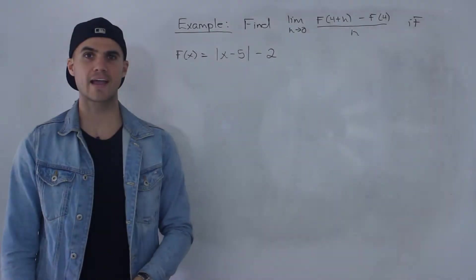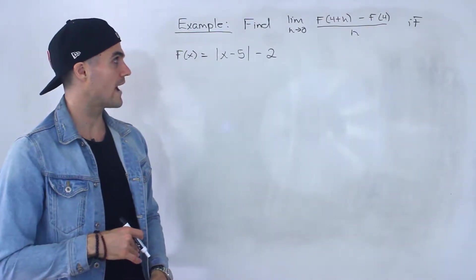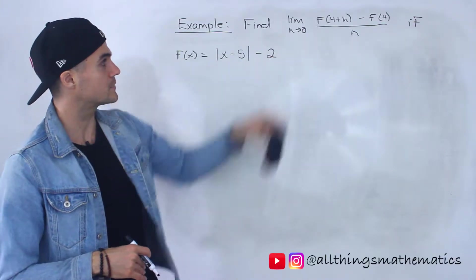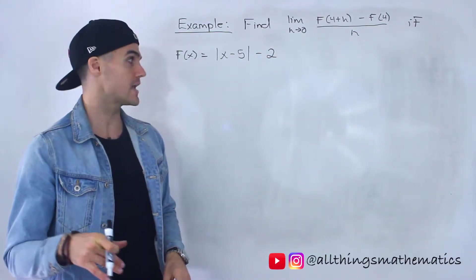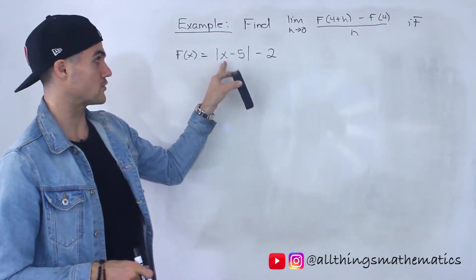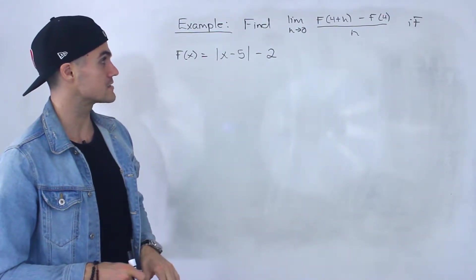What's up guys? Patrick here. Welcome back. In this video, we're asked to find this limit here: the limit as h approaches 0 of f(4+h) minus f(4) all over h, if the function is f(x) = |x - 5| - 2.